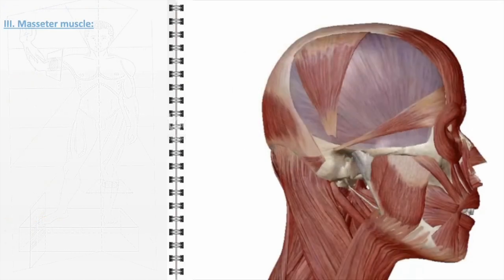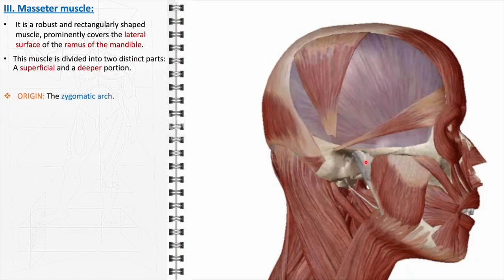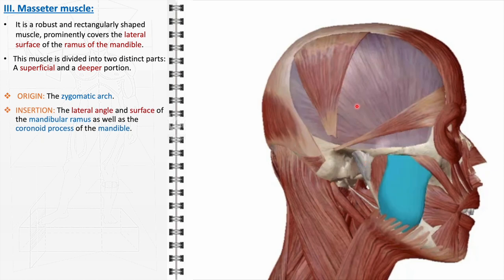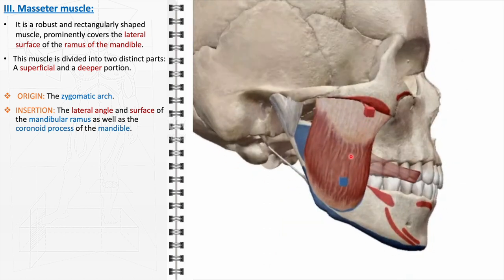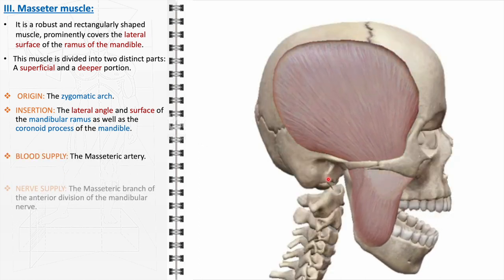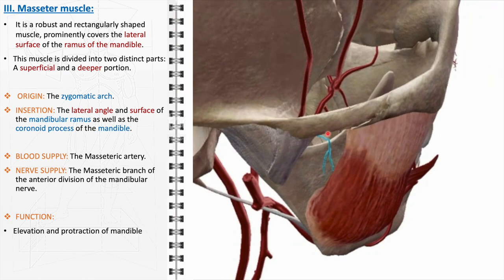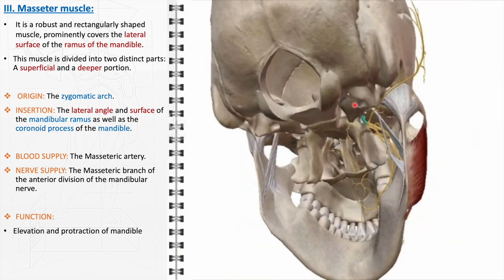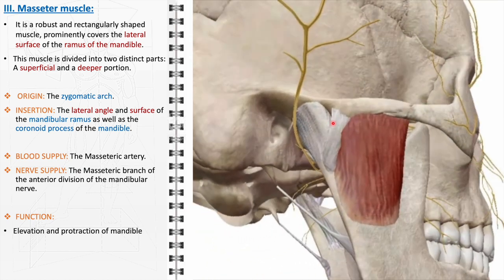The masseter muscle, with its robust and rectangular shape, plays a vital role in masticatory functions. Covering the lateral surface of the ramus of the mandible, it is divided into two parts: the superficial portion, which is larger and more visible, and the deeper portion, which lies beneath. Originating from the zygomatic arch, it inserts into the lateral angle and surface of the mandibular ramus and the coronoid process. It is supplied by the masseteric artery, a branch of the maxillary artery, and innervated by the masseteric branch of the anterior division of the mandibular nerve, a branch of the trigeminal nerve.